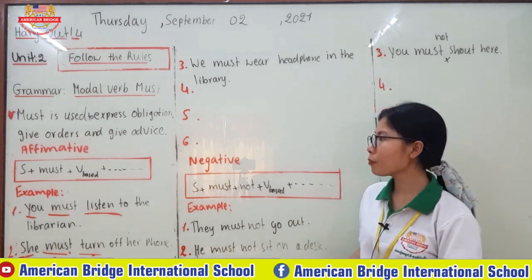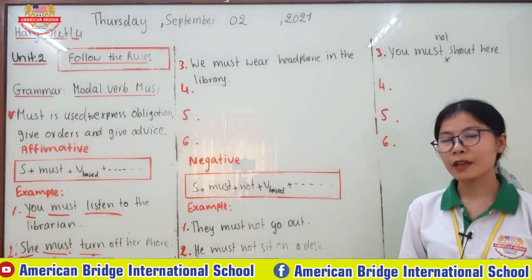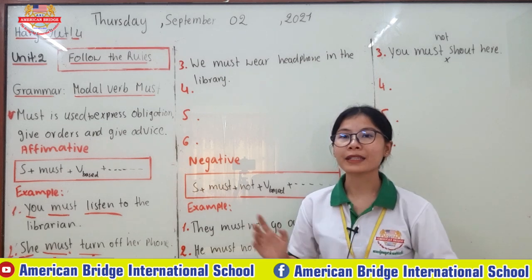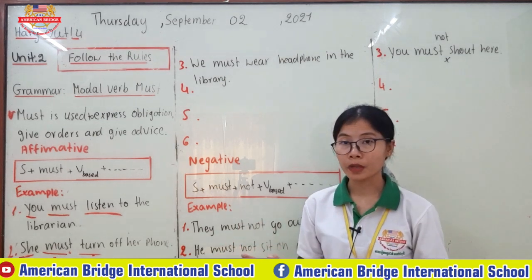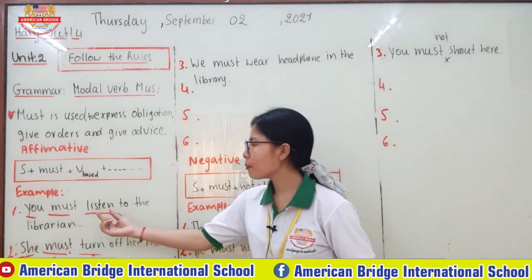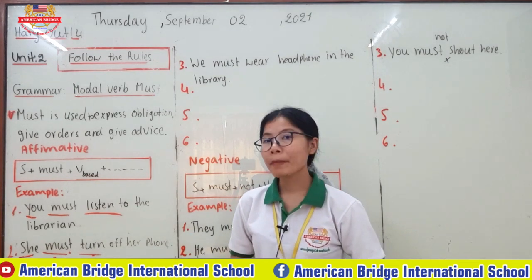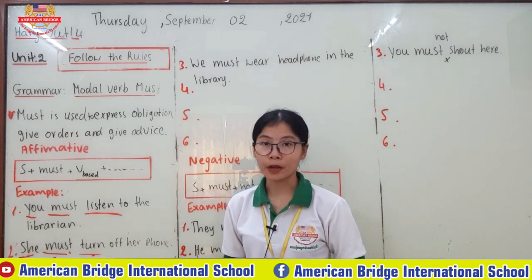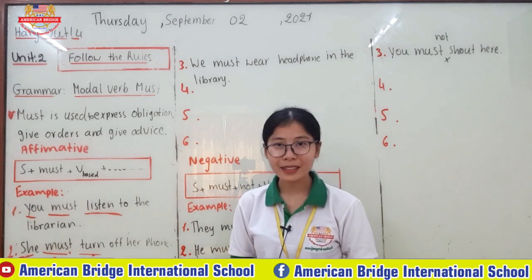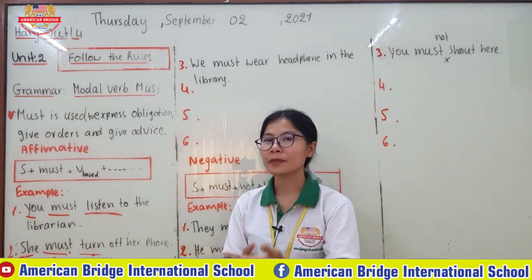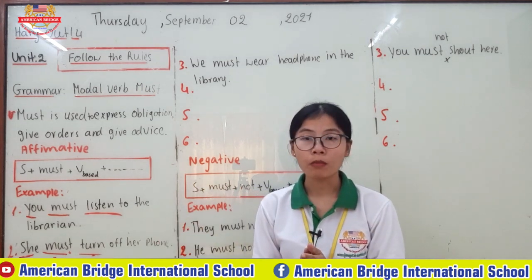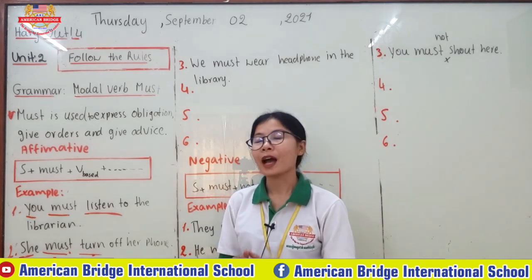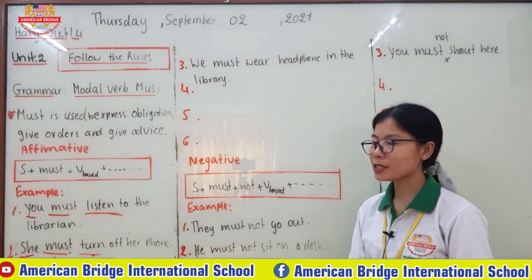To sum up: 'must' is used with verb base. Even with third-person singular, we don't add 's,' 'es,' or change 'y to ies' to the verb, because we use it as verb base. Verb base is the verb that never changes form. You might ask why we call it verb base and not verb one — because if it were verb one, you would need to change form with third-person singular. That's why we call it verb base. For the negative form, just use 'not' between 'must' and verb base.